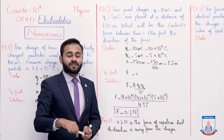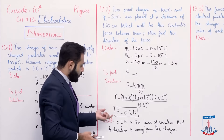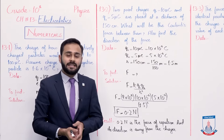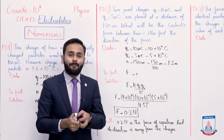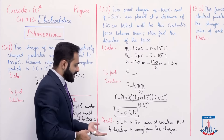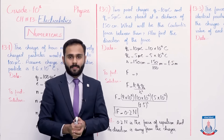Aapne us force ki direction bhi find karni thi. As you know, force jo hai woh 0.2 newton aa rahi hai jo ke bahut small hai. That means yahan par force of repulsion hogi. Ab force of repulsion jo hai woh humeyshaan repel karti hai, means charges ko door dhkailti hai. That's why its direction is away from the charges — yeh force un charges ko aapas mein door dhkailegi. So now move to the next numerical.